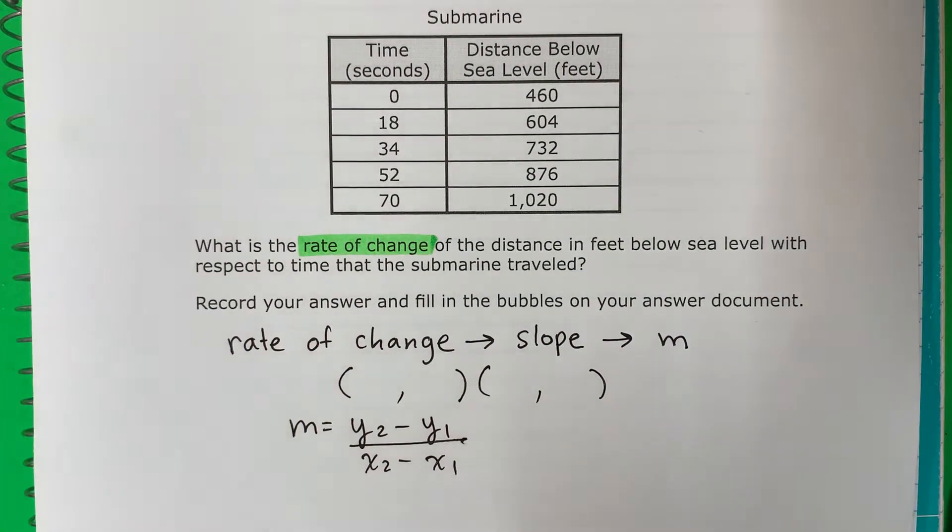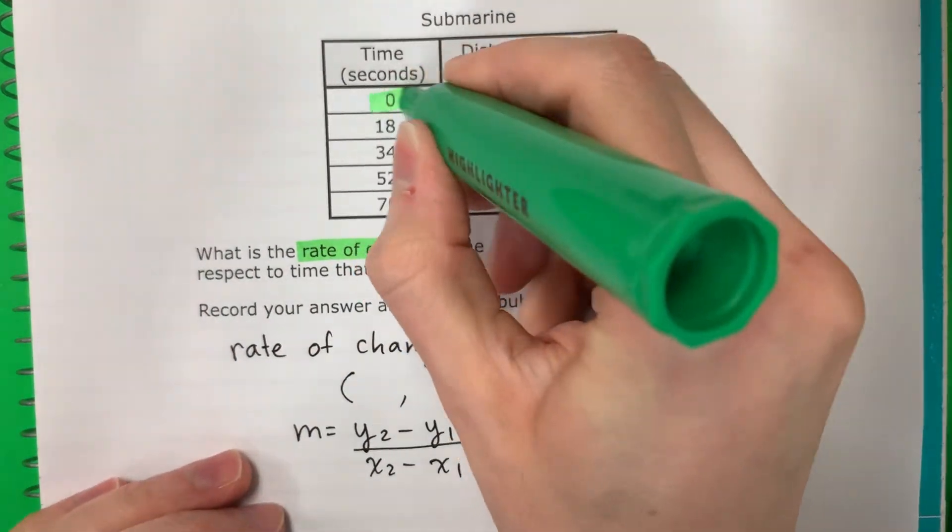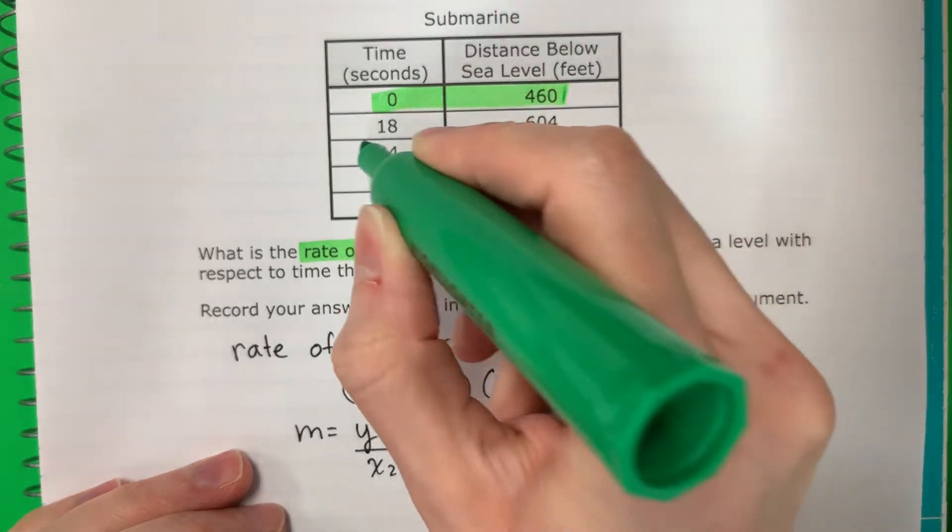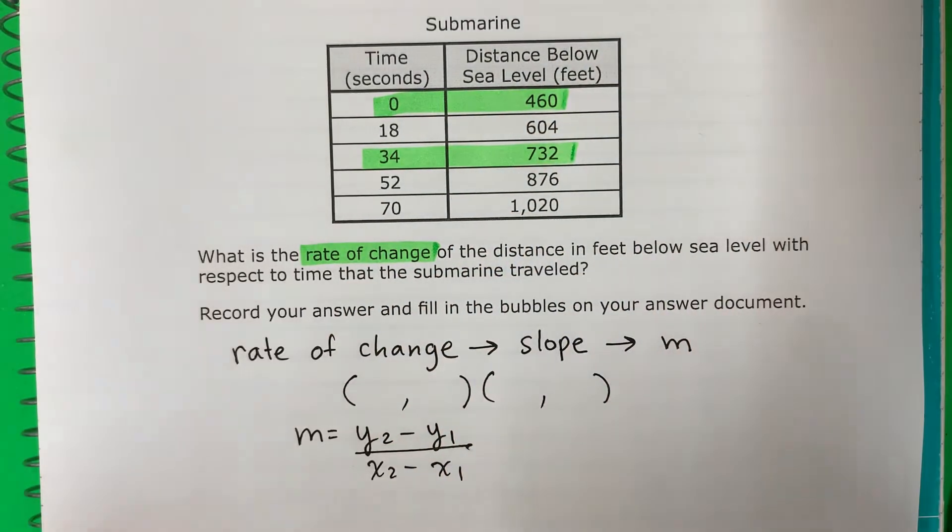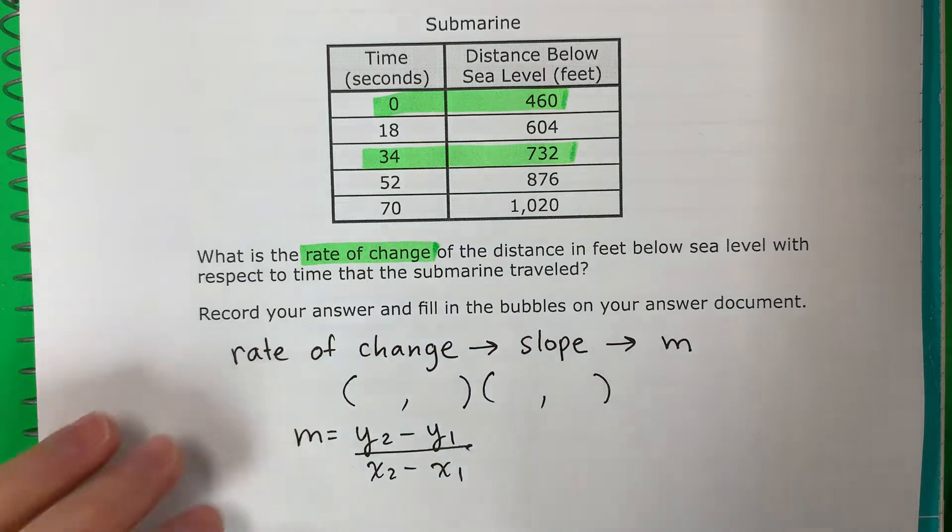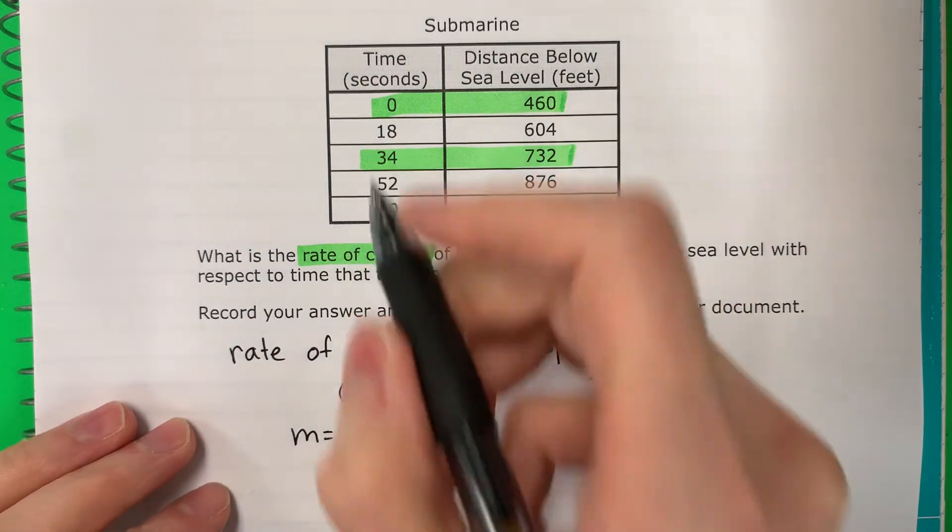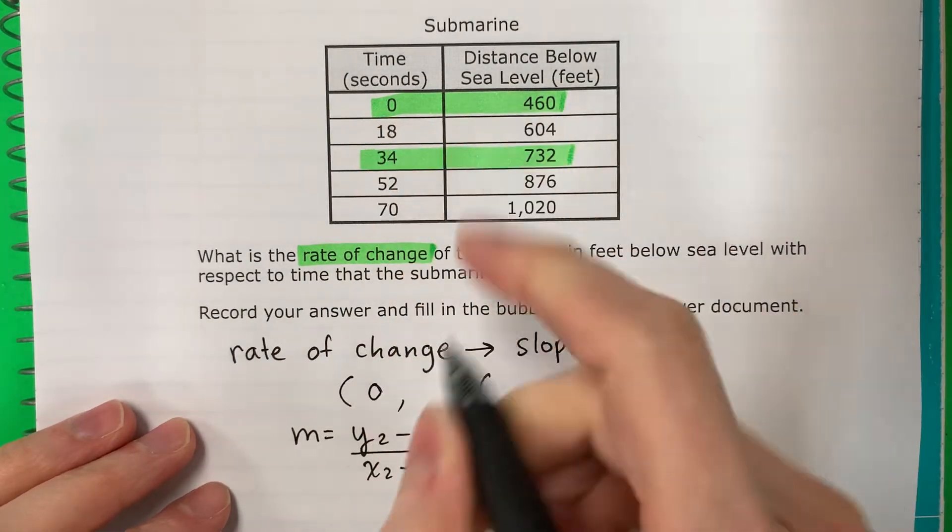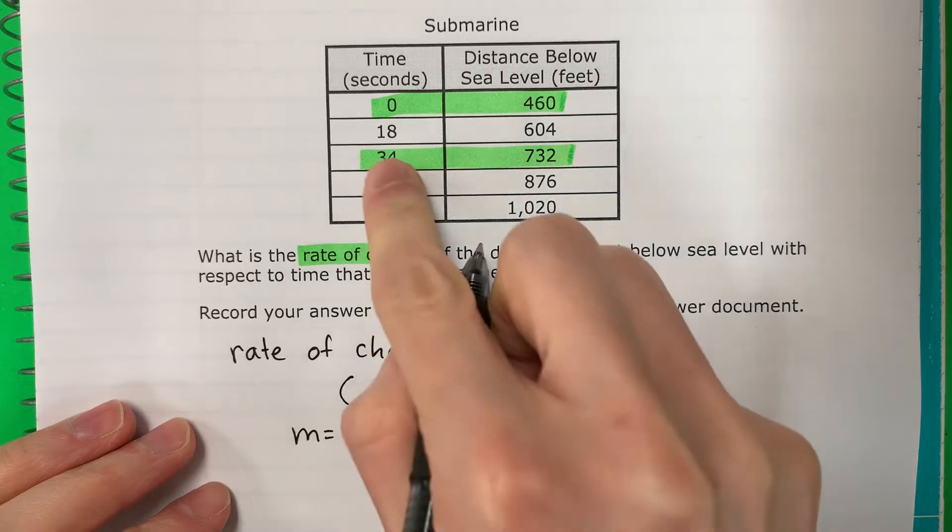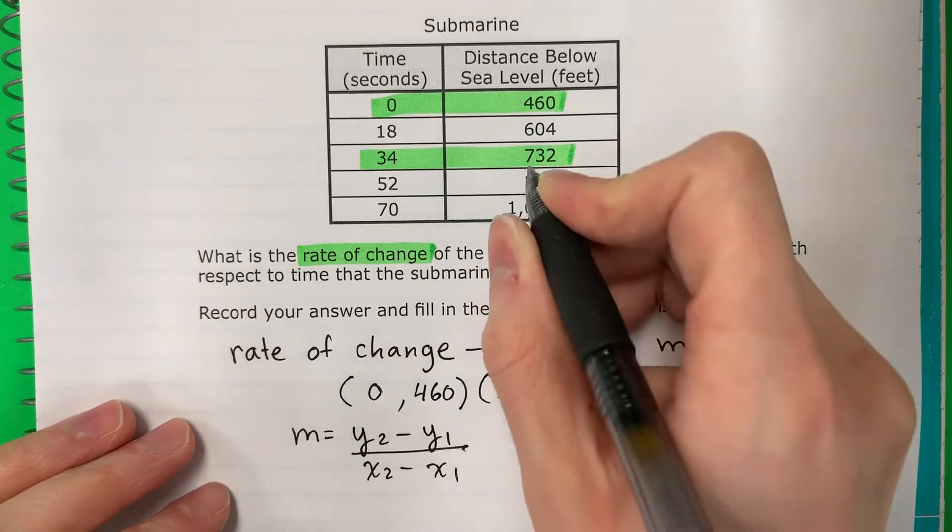No importa. I am going to use 0, 460, and 34, 732. Okay, you can do whatever pairs you want. Pueden usar cualquier pares que quieran. So 0, 460, 34, 732.